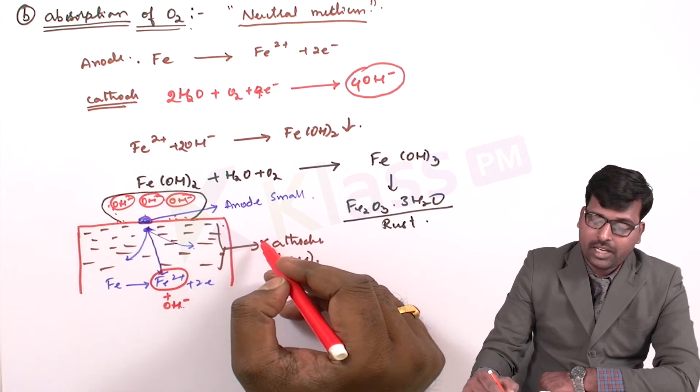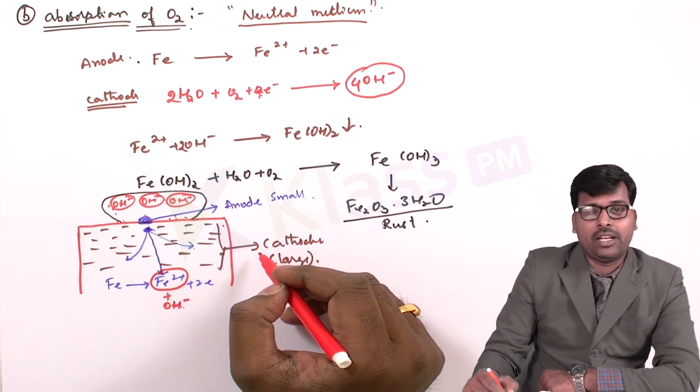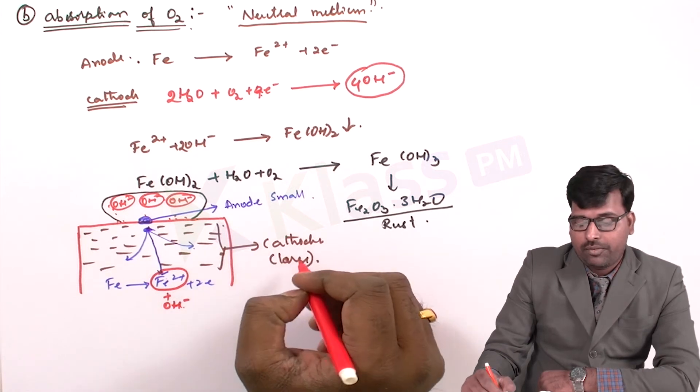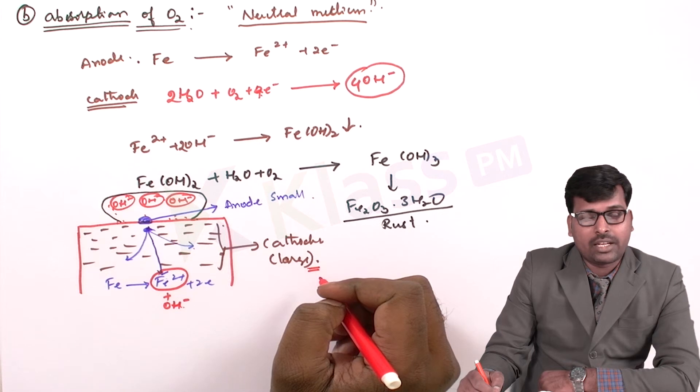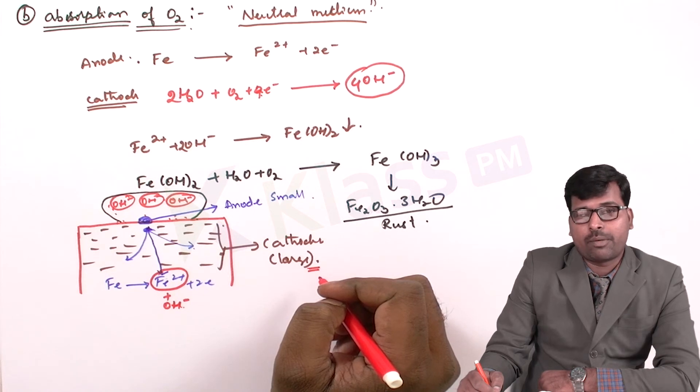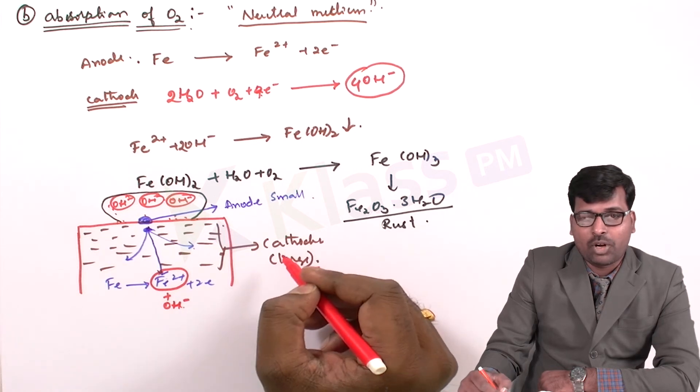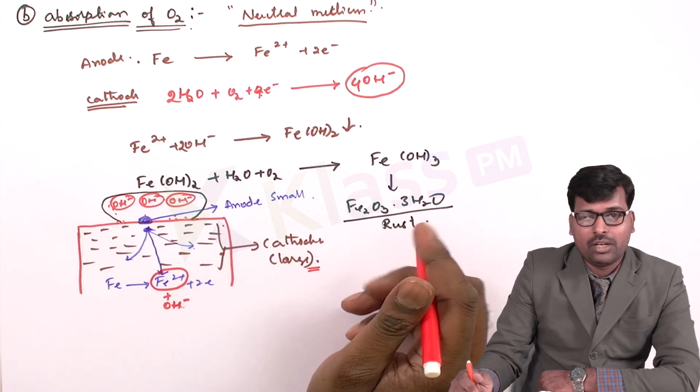So the rate of corrosion in this case of absorption of oxygen will be very much high because of the larger cathodic area. Because of the presence of larger cathodic area, the cathode will seek the electrons more and more from anode. So the anode will start corroding.